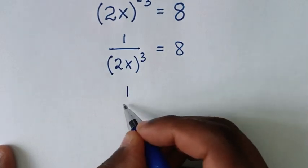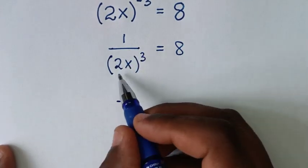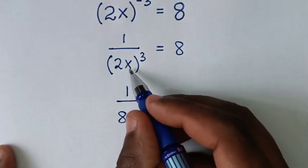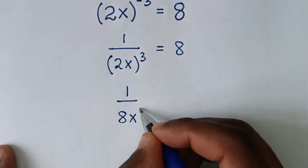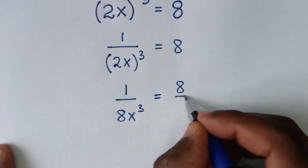Then in the next step it will be 1 over... we'll take this power of 3 inside the bracket, so 2^3 is 8, then times x^3. So here it will be x^3, then equals 8, which is the same as 8/1.